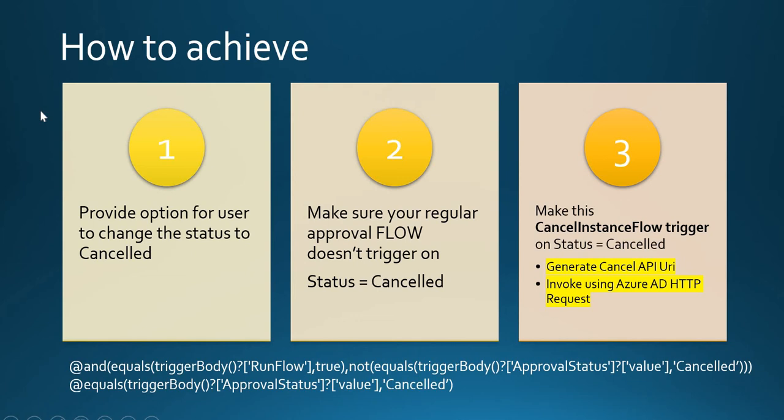These are the steps we have to follow. First, we have to modify your main flow — the current approval flow running on your list or whatever data source you're using — and change the trigger condition so it won't get triggered whenever the user changes the status to canceled. Then we will create another flow which will actually handle cancelling the running flow instances.